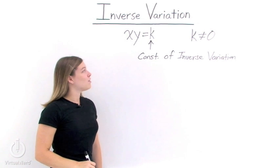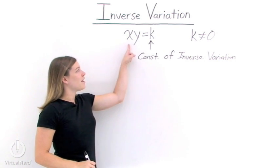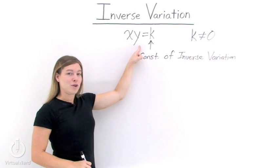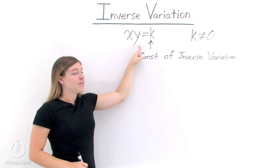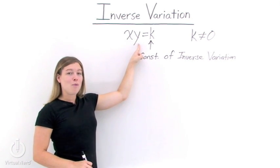Now, also looking at this formula, we can see that as x increases, y will decrease, and the other way around. If x decreases, then y increases.